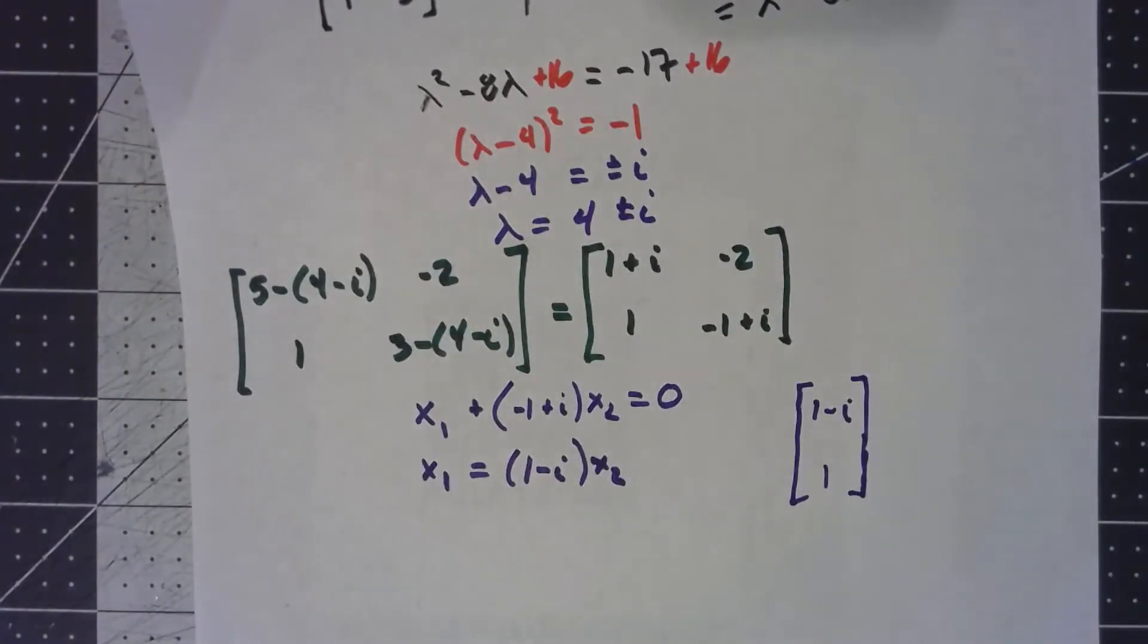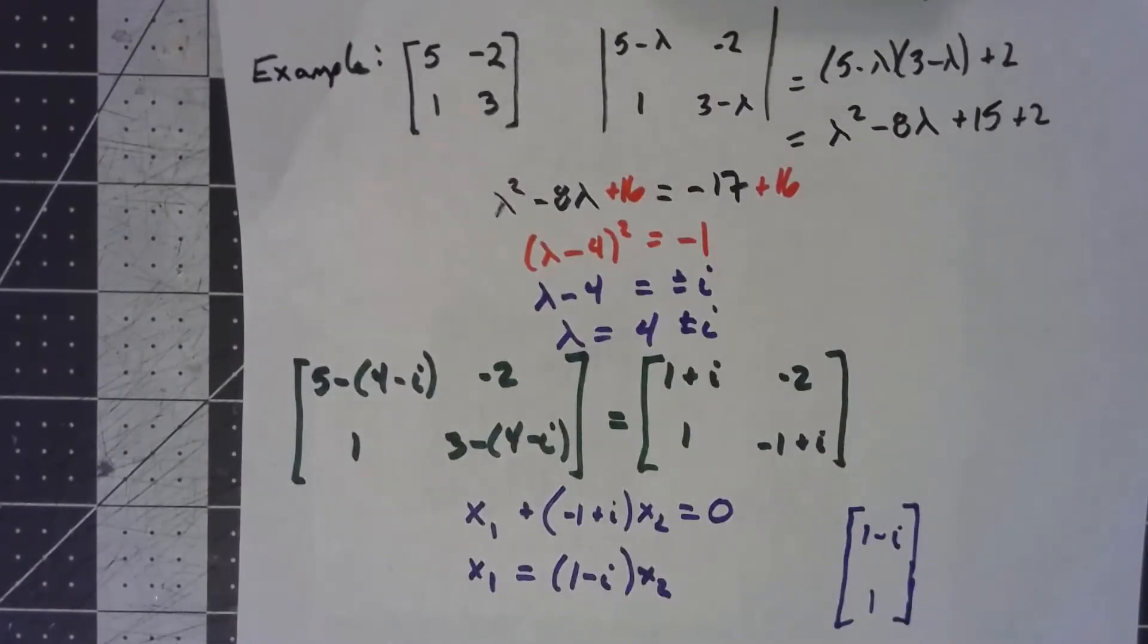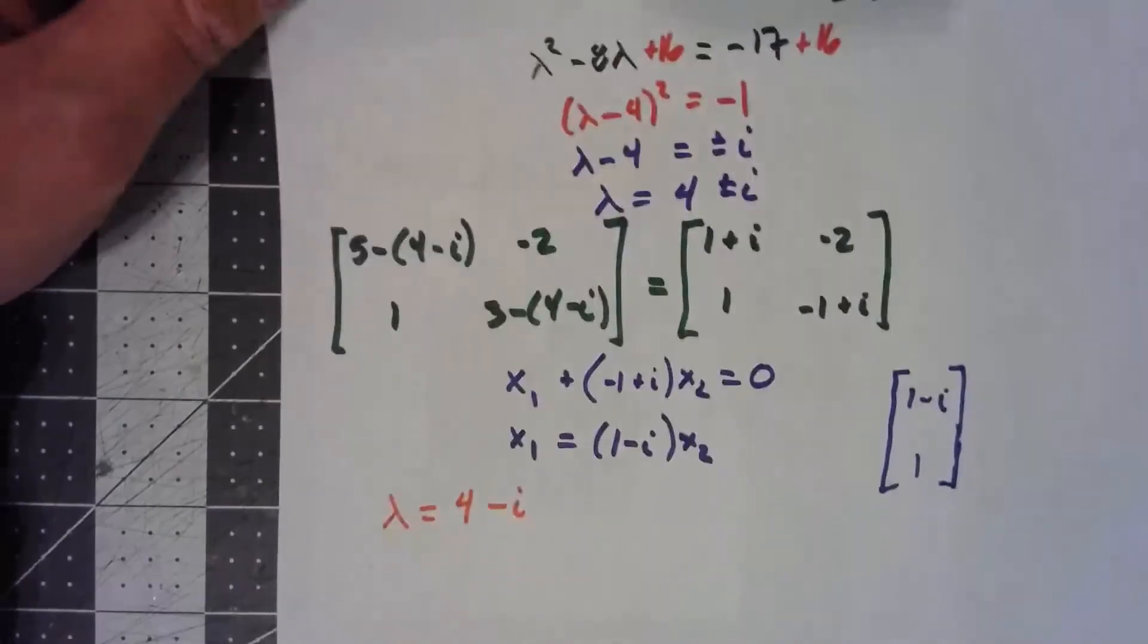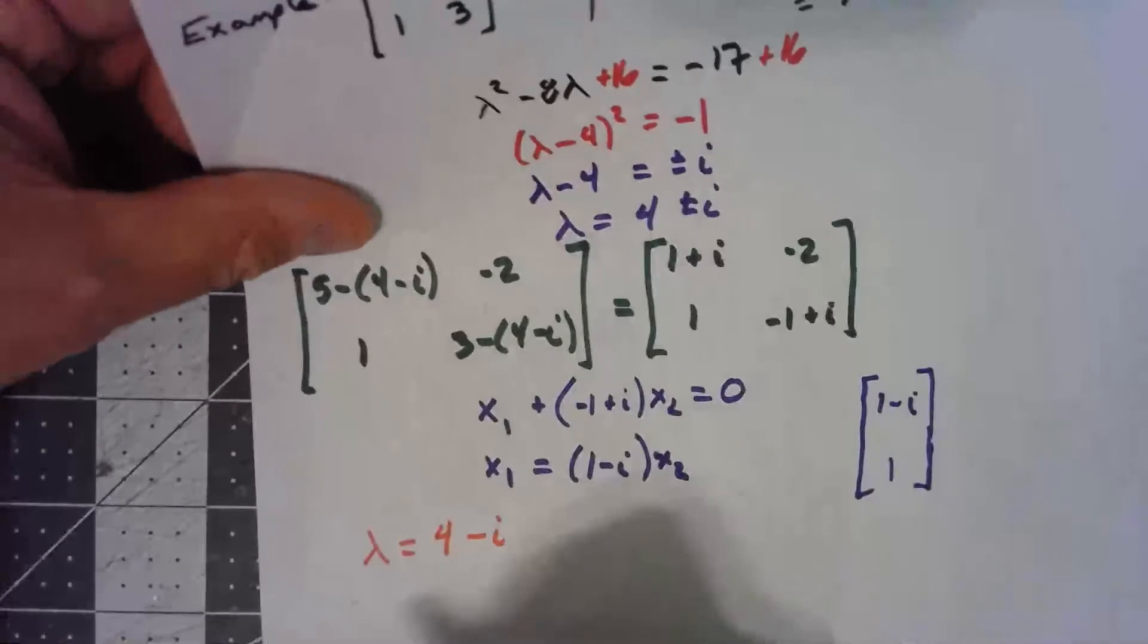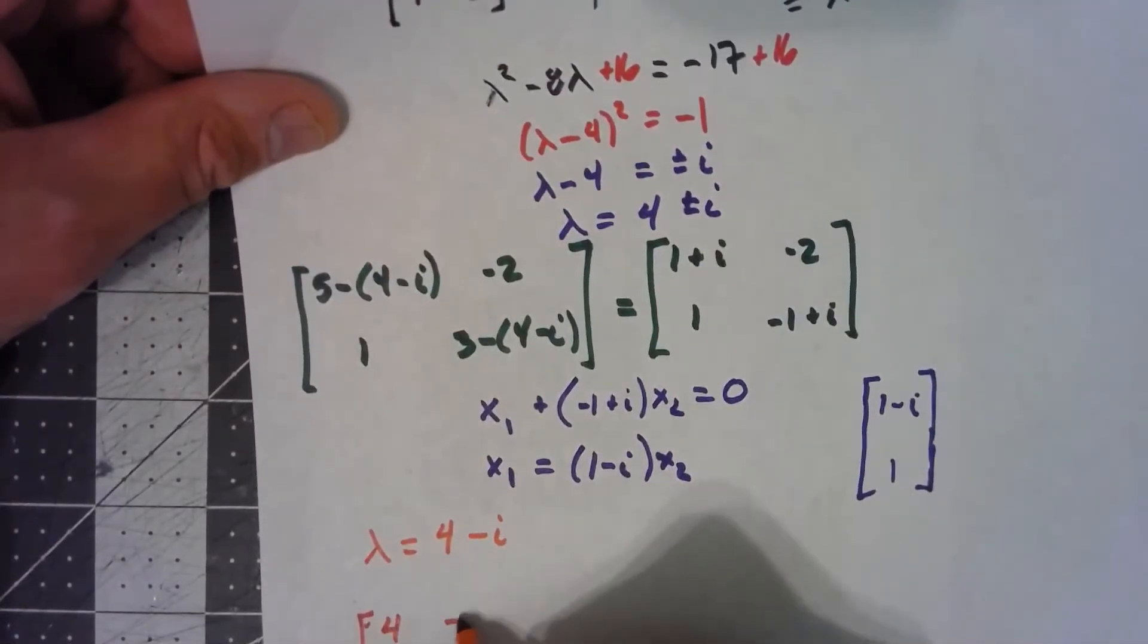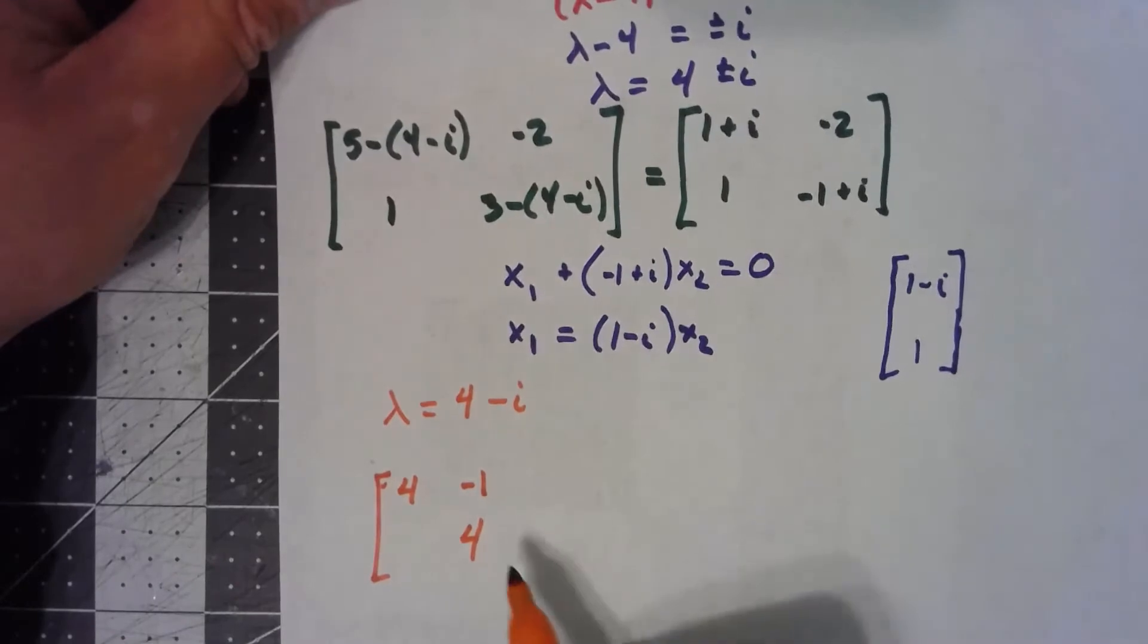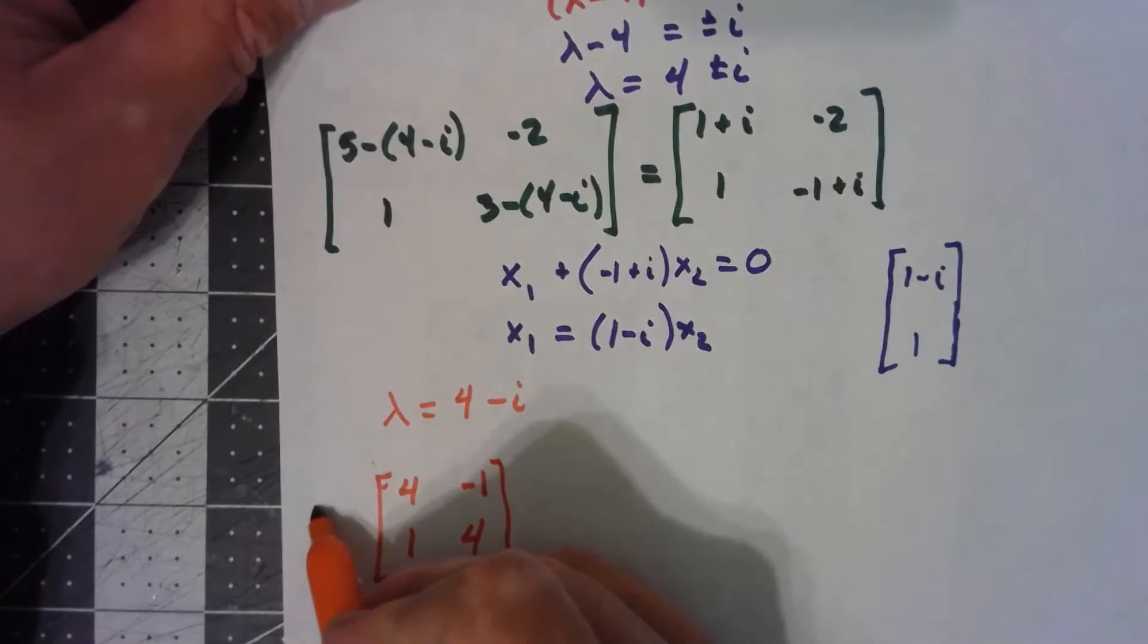Okay, so what does that mean in terms of this theorem? Well, my C matrix—again, I'm going to take my λ = 4 - i. My C matrix is [a, -b; b, a], so that's [4, -(-1); -1, 4] = [4, 1; -1, 4]. But this has the opposite signs, that's a positive 1. And so that is my C matrix.